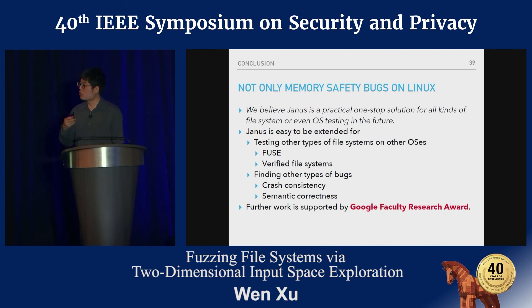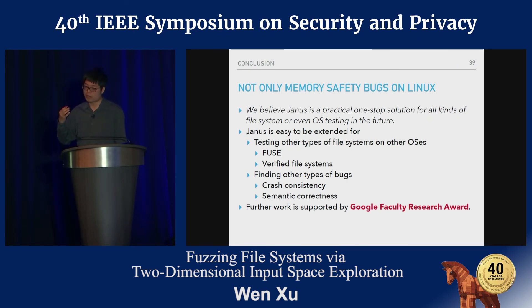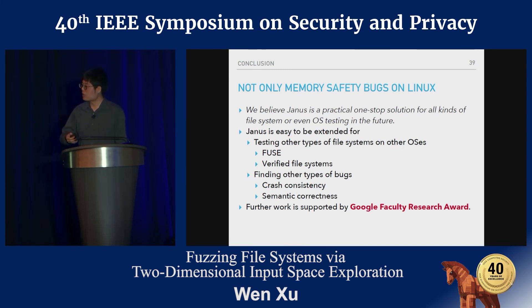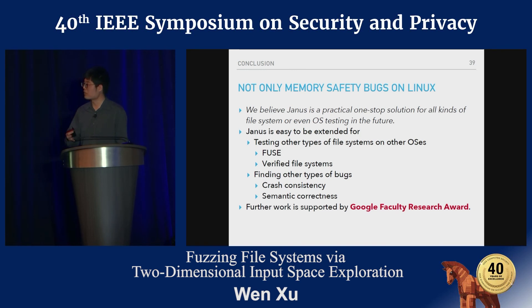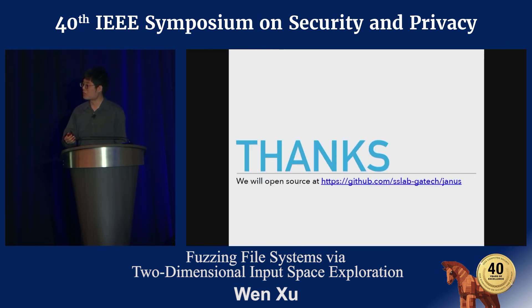We believe Janus is a practical one-stop solution for all kinds of file system testing. Developers and researchers can use Janus to test other types of file systems and operating systems by porting our file system fuzzing core engine. This work focuses on finding memory corruption bugs, but it can be ported to find other file system bugs like consistency or semantic correctness. We believe using library OS is also a good inspiration for other OS fuzzing research. This work is supported by a Google Faculty Research Award and we will open source Janus soon.